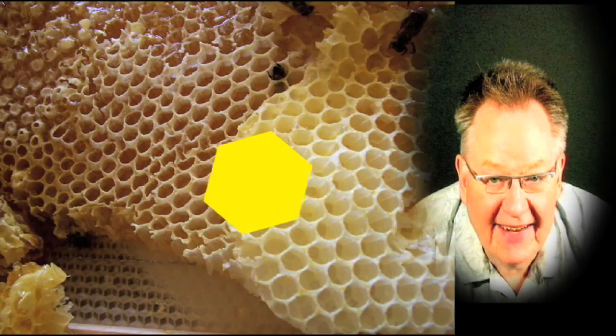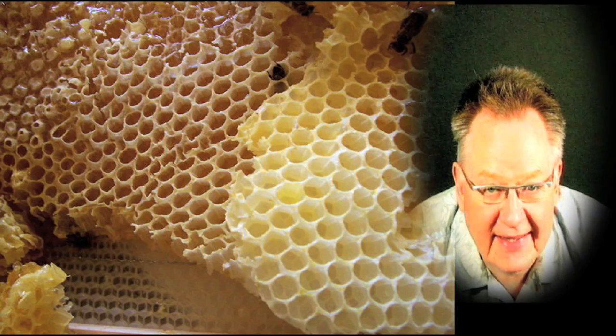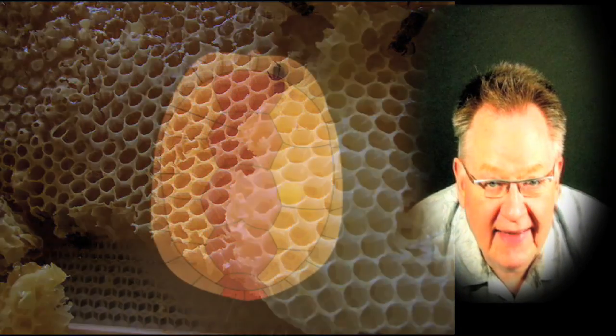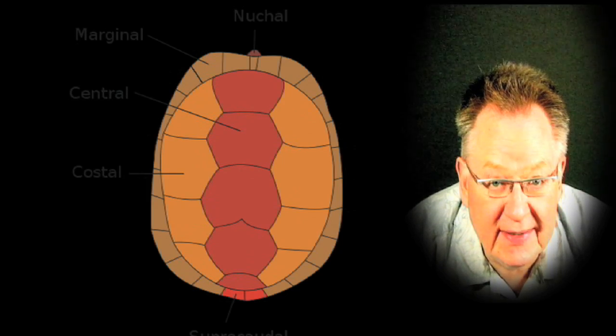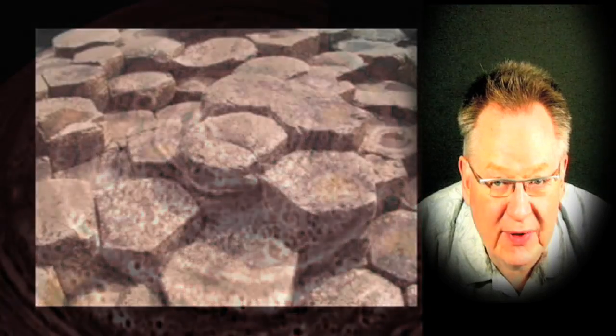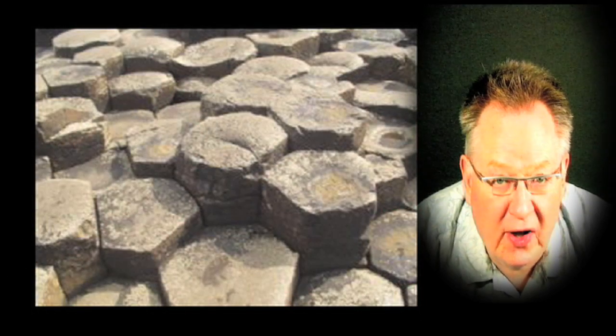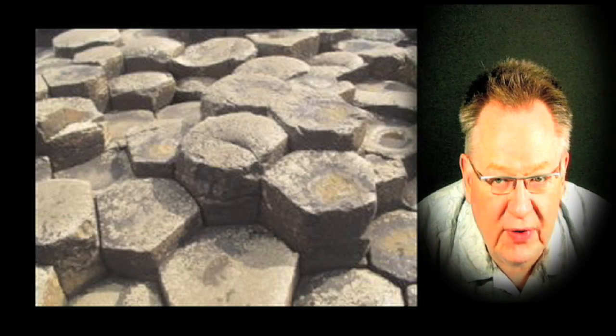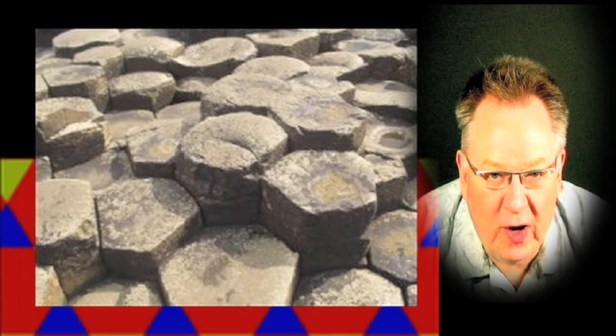The six-sided hexagon is not just an abstract concept from your geometry class — it appears in nature as well. First, one of the most obvious ones: the hexagons of a beehive's honeycomb. Then the six-sided scutes of a turtle's carapace. Next, we'll look at a north polar hexagonal cloud feature on Saturn, discovered by Voyager 1 and confirmed in 2006 by Cassini. And finally, naturally formed basalt columns from Giant's Causeway in Ireland. Hexagons also appear in snowflakes and even at the molecular level in various compounds.